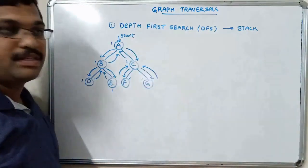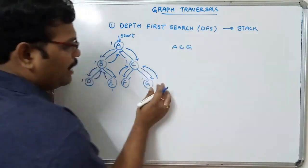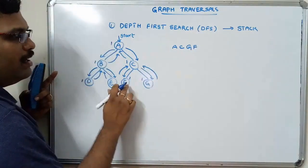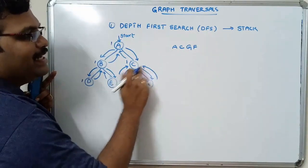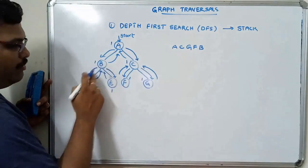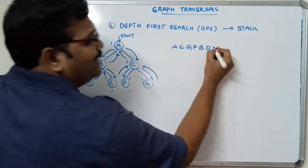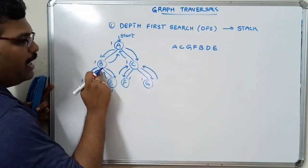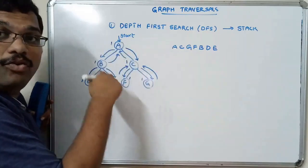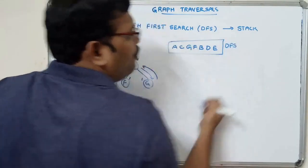So the DFS traversal order is: A, C, G, F, B, D, E. Already visited nodes are skipped - C is visited, A is visited, B is visited. This is the DFS of the given graph.